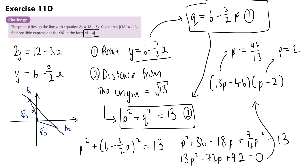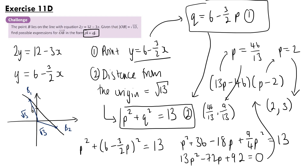Substituting back into the first equation to find q: for p equals 46 thirteenths, q equals 6 minus three-halves times 46 over 13, giving q equals 9 thirteenths. For p equals 2, q equals 6 minus three-halves times 2, giving q equals 3. So the two possible expressions for ob are 2i plus 3j, and 46 thirteenths i plus 9 thirteenths j.